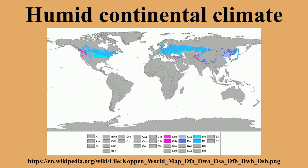A humid continental climate is a climatic region defined by Russian-German climatologist Vladimir Köppen in 1900, which is typified by large seasonal temperature differences, with warm to hot summers and cold winters. Precipitation is usually well distributed through the year.